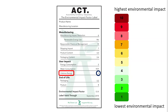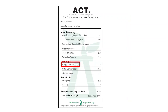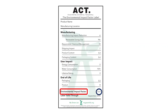Most everything on the label is on a score of 1 to 10. The two exceptions are energy consumption and water consumption. These are reported as actual values in terms of kilowatt hours per day or gallons per day. This was done to give you the opportunity to calculate the actual impact of a product's electricity or water consumption. However, the same rule applies: the lower the number, the lower the environmental impact.